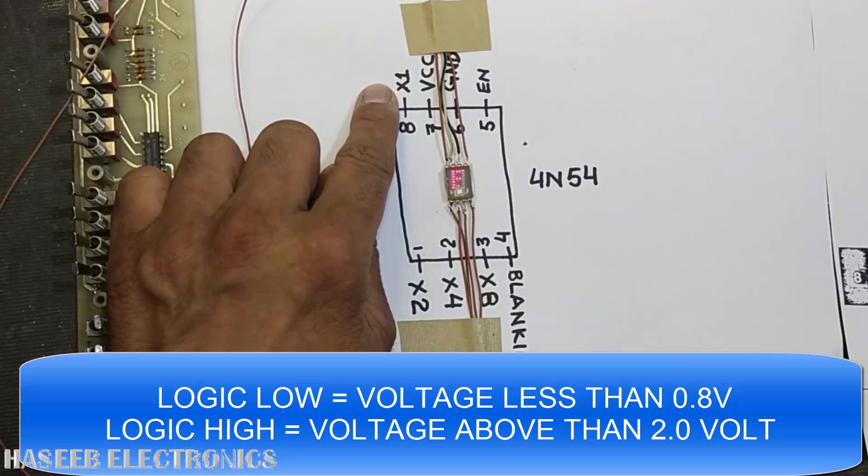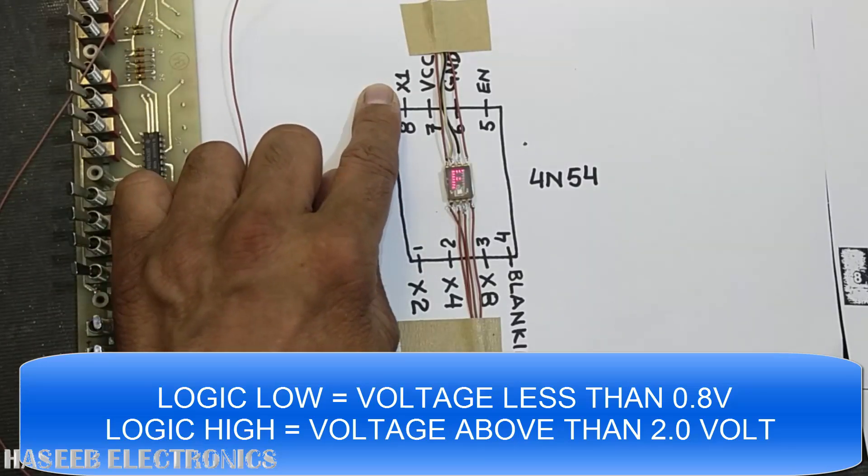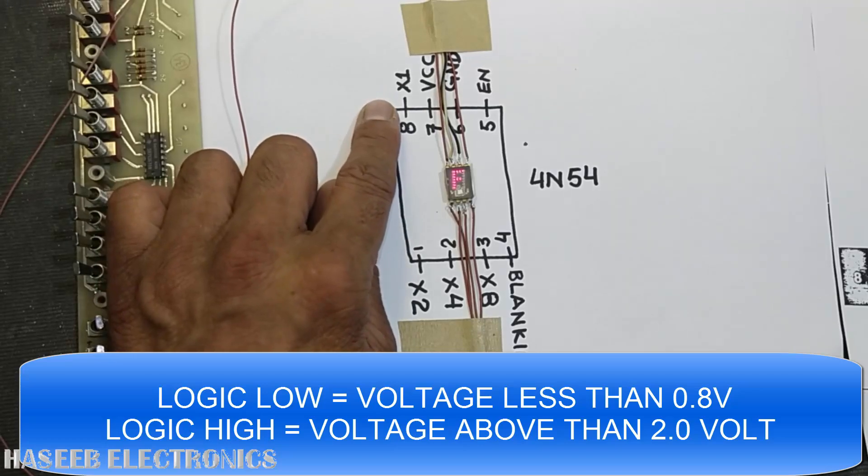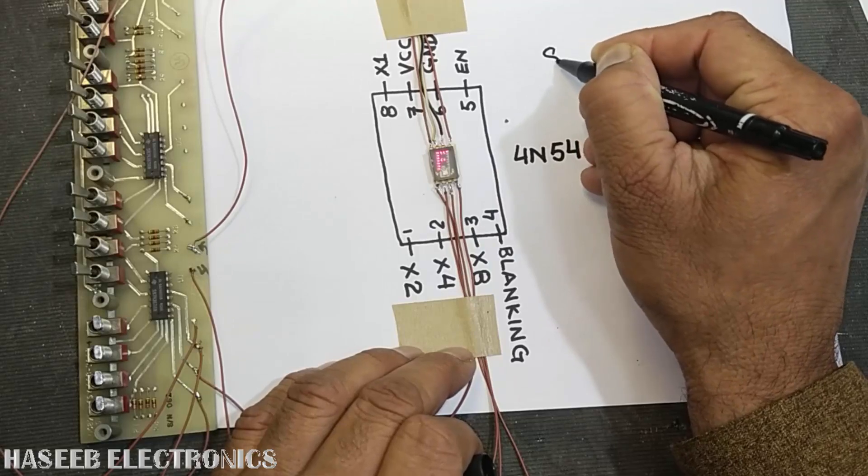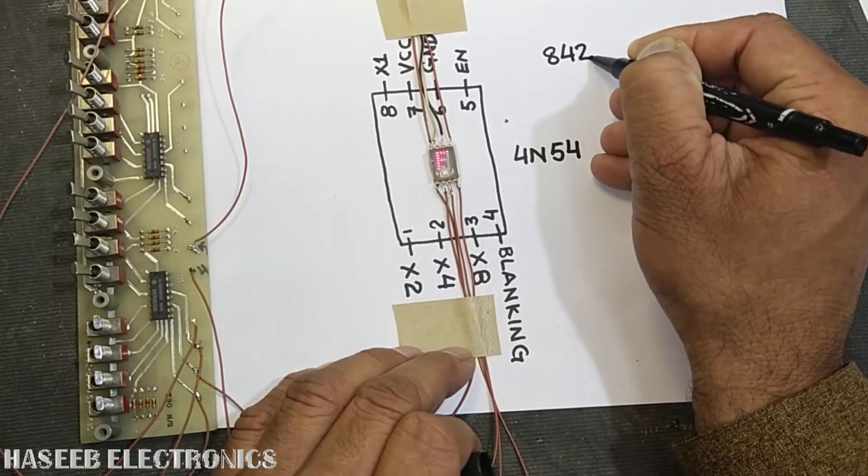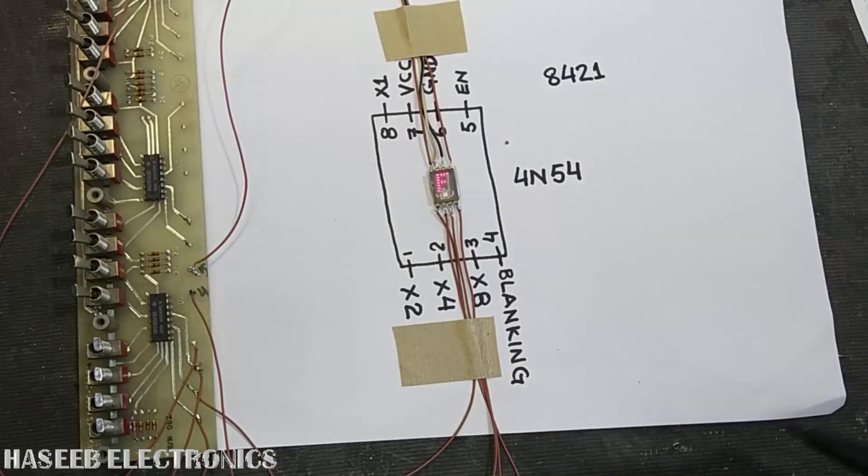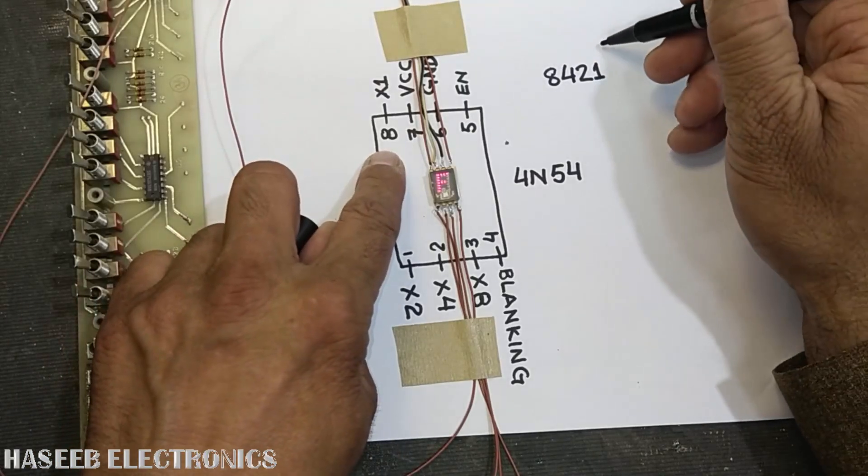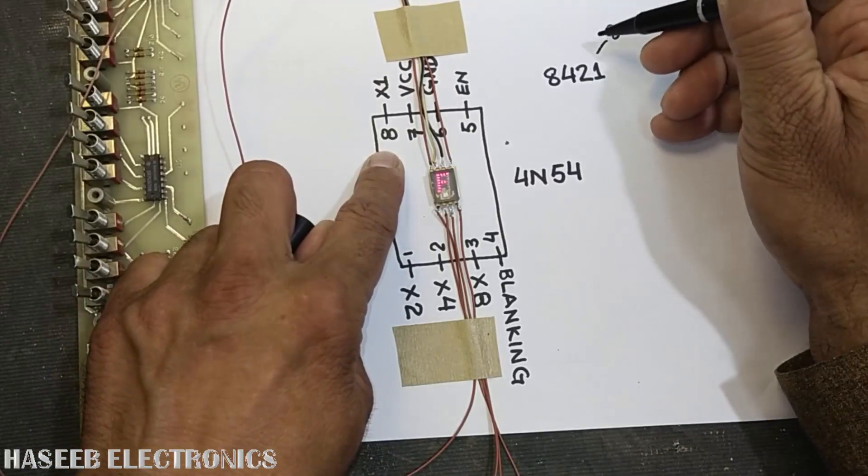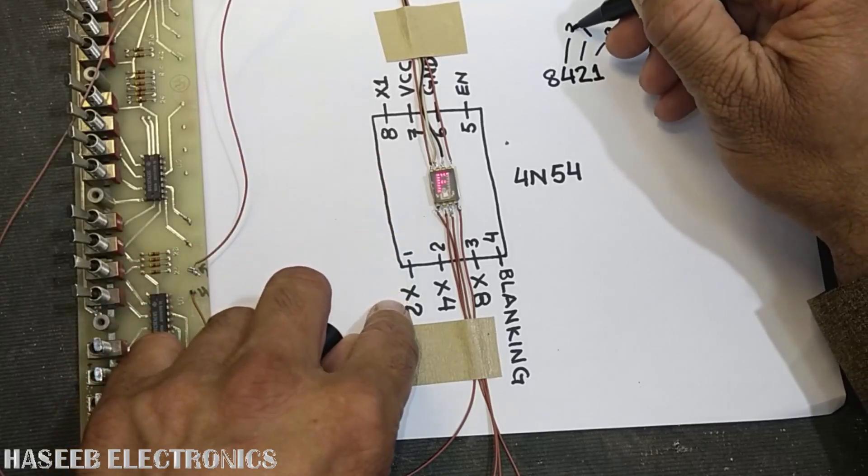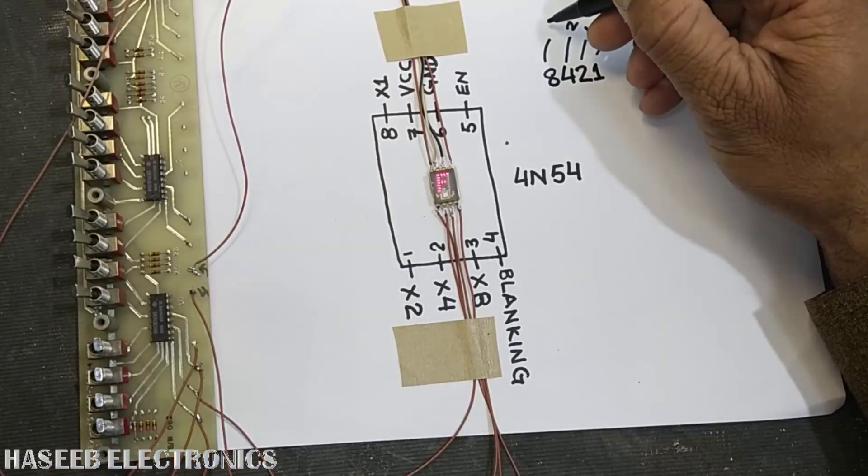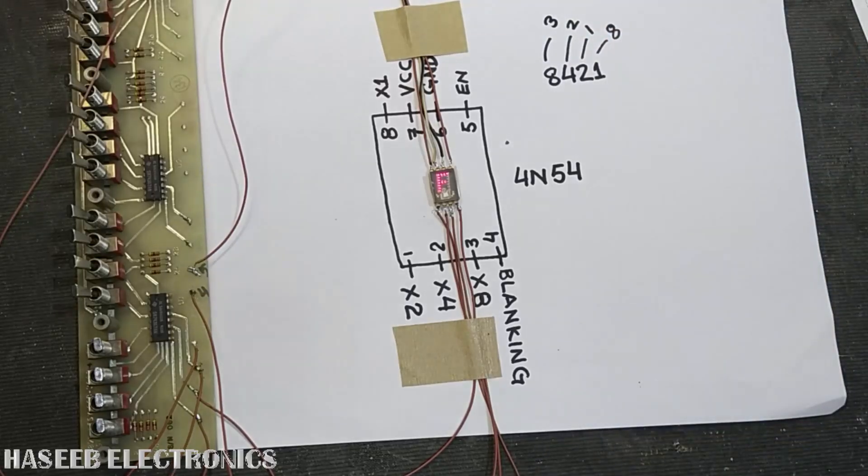Pin number 8, that is the LSB X1 input from the binary code. So the data applied here is 8421. This is pin number 8, LSB; pin number 1, pin number 2, and pin number 3. These are the data inputs.